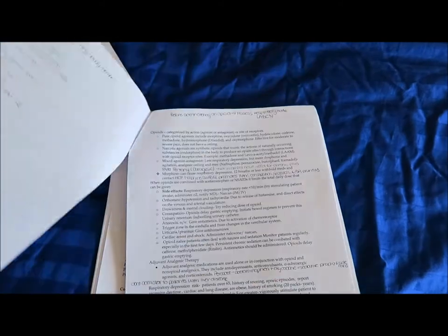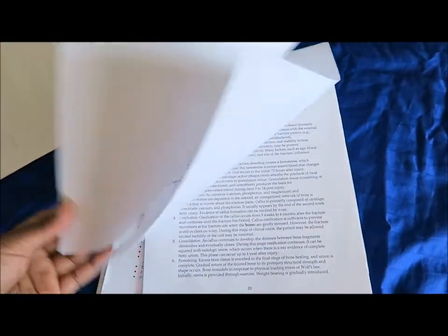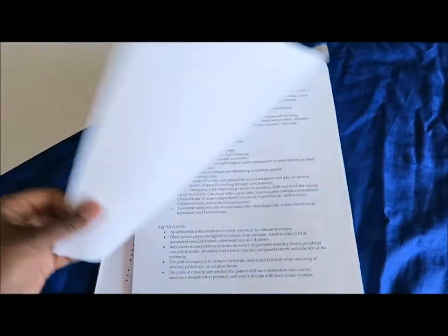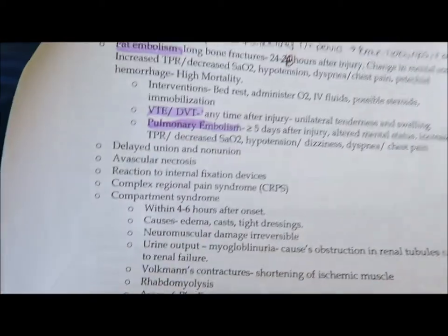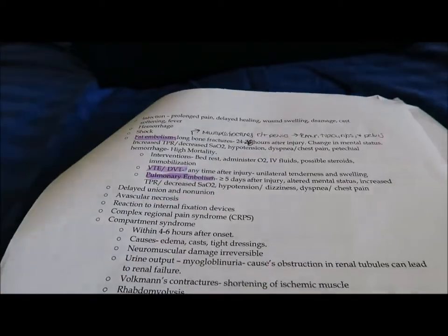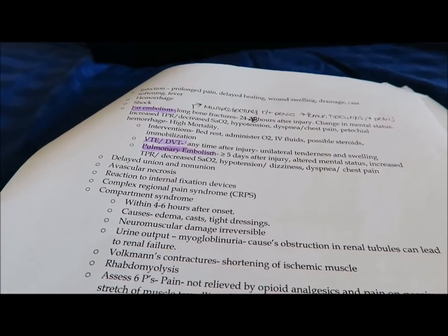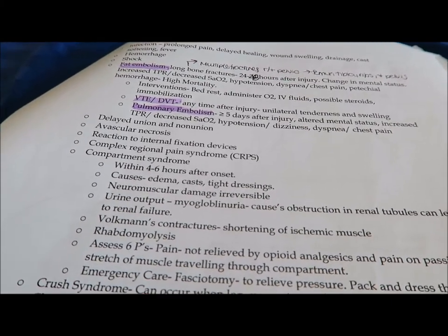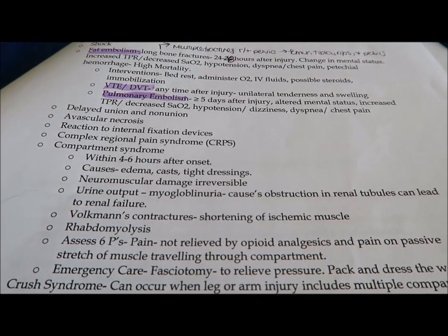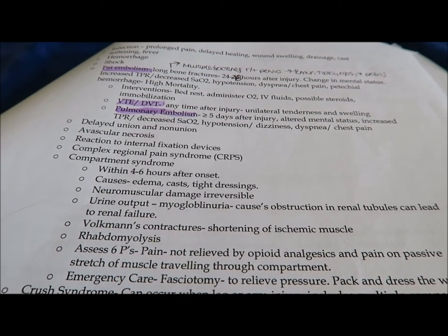One thing I definitely remember that was important and was on our exam was what was the difference between a fat embolism and a pulmonary embolism. If you didn't really review the differences between the two, you would have actually got that question wrong. The main difference between a fat embolism and a pulmonary embolism, the main thing that stuck out to me, was actually the timing in which it happens. A fat embolism could happen 24 to 48 hours after the injury, whereas a pulmonary embolism typically happens five days after the injury.